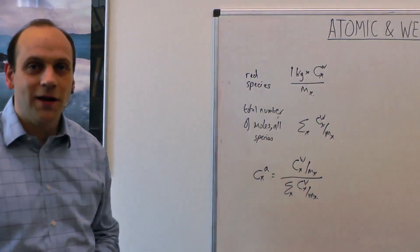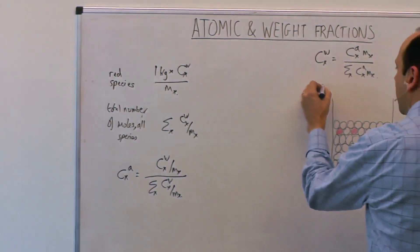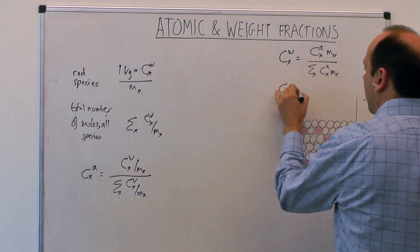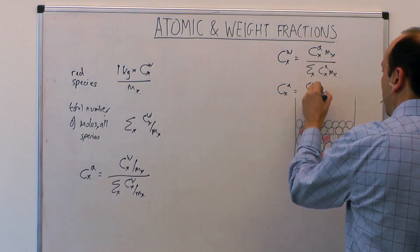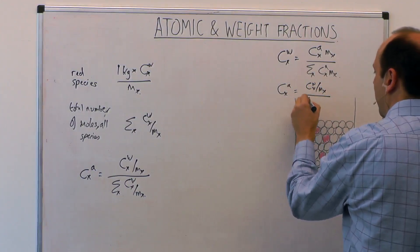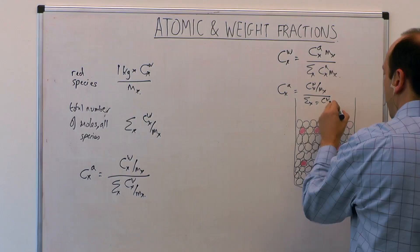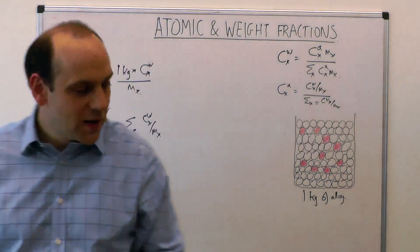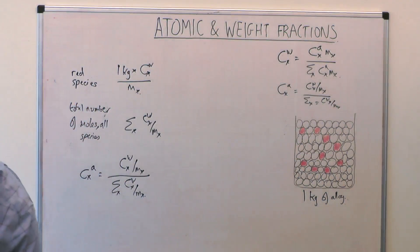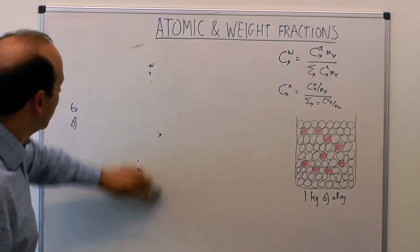That's how we do it if we want to go from weight to atomic fraction. It's just the inverse of the other equation. So c x a is equal to c w x divided by m x divided by the sum over x of c w x over m x. That's how you go from there to then. Now we'll do an example to look at how we use that in practice.